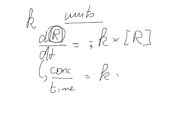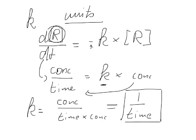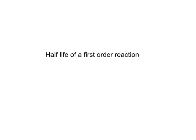The unit for concentration divided by time equals k times concentration. Solving for k, we get k equals concentration over time times concentration, which gives us one over time. So the unit for a first-order rate constant is always one over time.